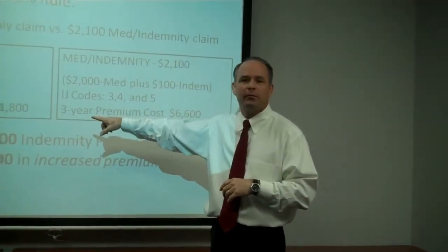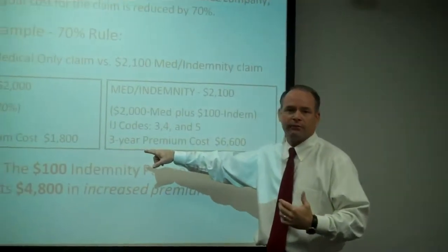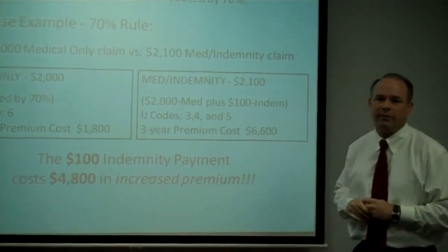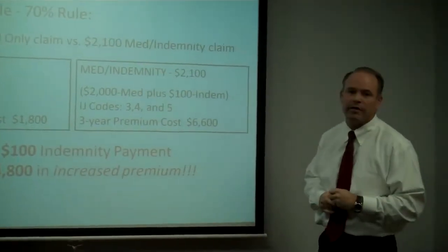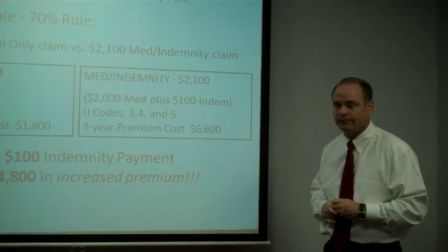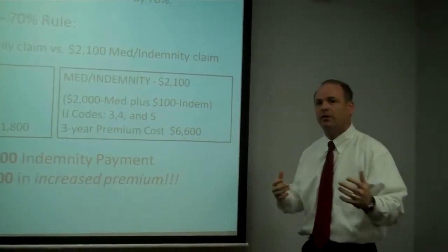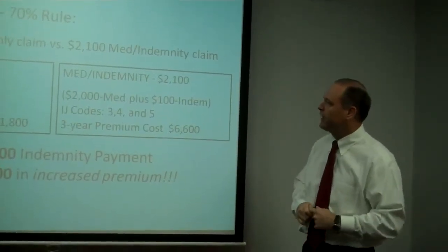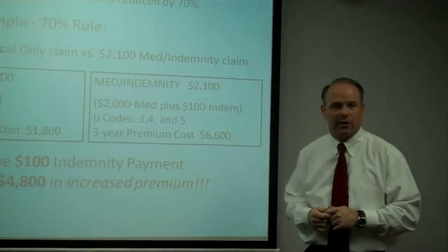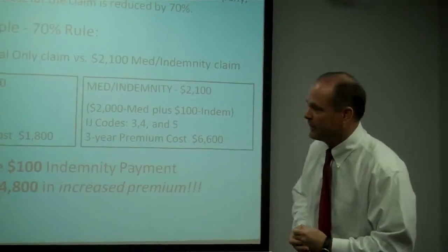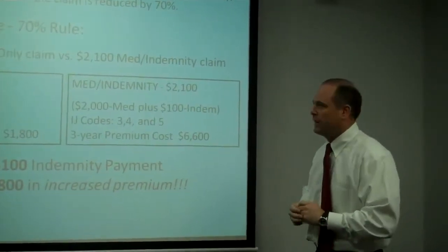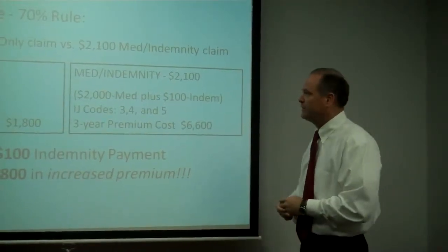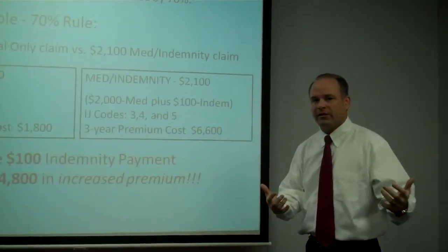The three-year premium cost, everybody knows that you live with a claim for three years. The three-year additional cost for having that one claim in this particular insurance history is $1,800 additional dollars. The insurance company paid $2,000, the insurance is going to pay an additional $1,800. We then took that claim and added $100 of lost wages onto that claim. We had $2,000 in medical bills, $100 of lost wages.